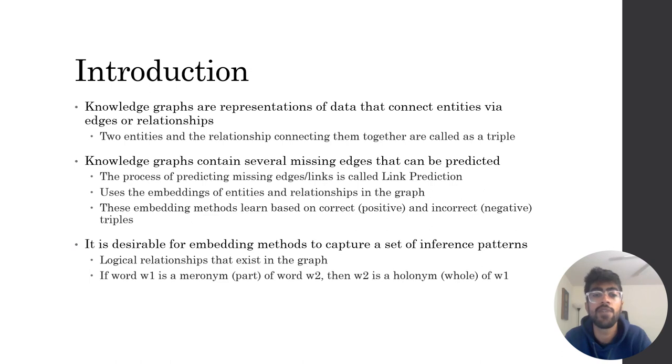Link prediction typically uses the embeddings of entities and relationships in the graph. It is desirable for embedding methods to capture a set of patterns or the logical relationships that exist in the graph at hand.